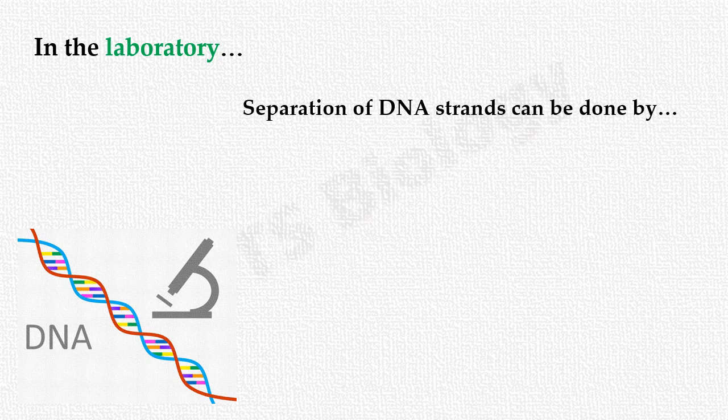In the laboratory, the hydrogen bonds of the DNA double helix can be disrupted by two methods. The first method is by changing the pH of the DNA solution, and the second method is by heating the DNA solution.